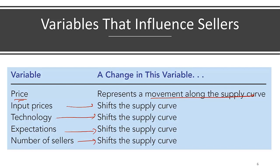Let's understand input prices: if input prices increase, your profit margin decreases so you sell less. Mind you, this is the price of the input — not the price of the ice cream cone. Inputs might be sugar or wheat that go into making the ice cream cone. So if input price increases, supply decreases or shifts left. On the other hand, if technology improves, generally better technology means lower cost, so supply increases and shifts right.